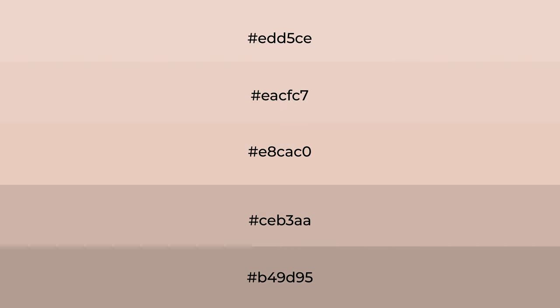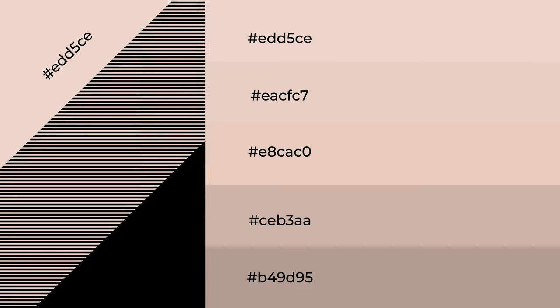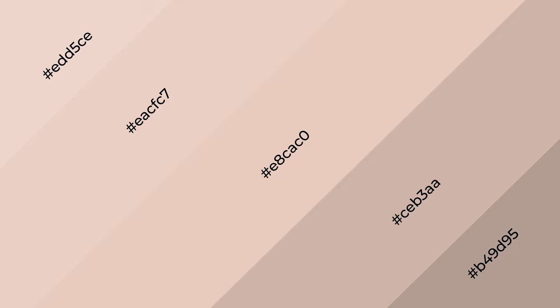To generate shades of a color, we add black to the color, and it is used in patterns, 3D effects, and layers. Shades create depth and drama. All natural is a warm color and it emits cozier and active emotion.